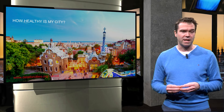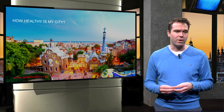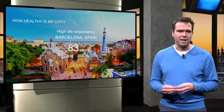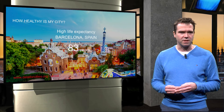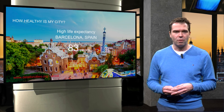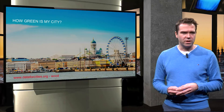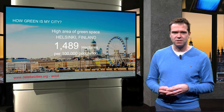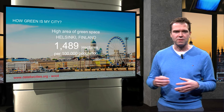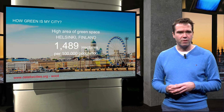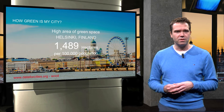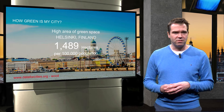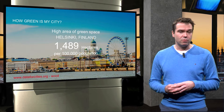City data can actually help to answer questions like: how healthy is my city? The city data from Barcelona shows that the life expectancy is 83 years, which is relatively high. Or from the question, how green is my city? You can learn that Helsinki has almost 1,500 hectares of green space per 100,000 citizens. Various cities suggested an indicator on the distribution of green over the city. ISO will add this indicator, which shows that the feedback loop works.